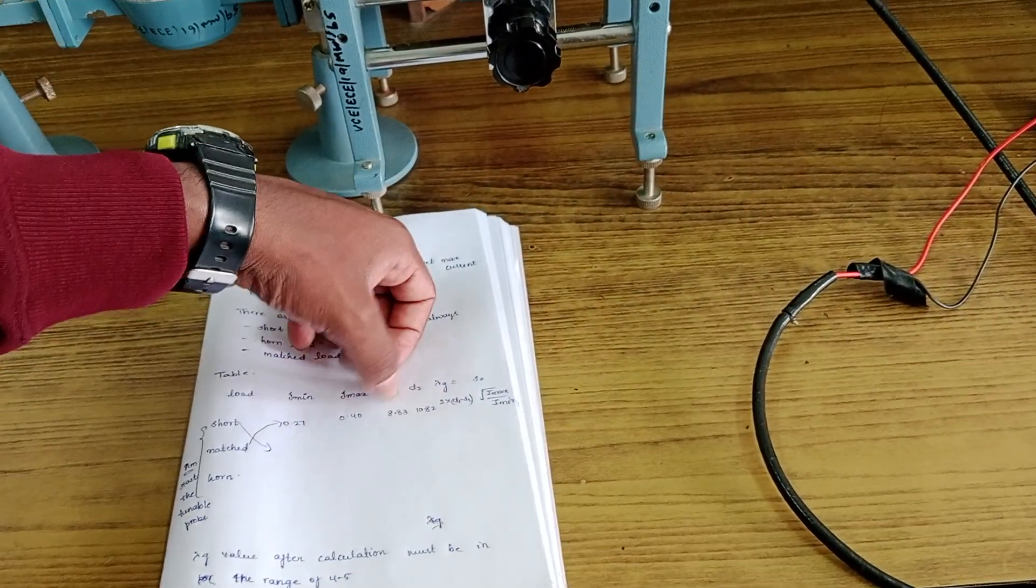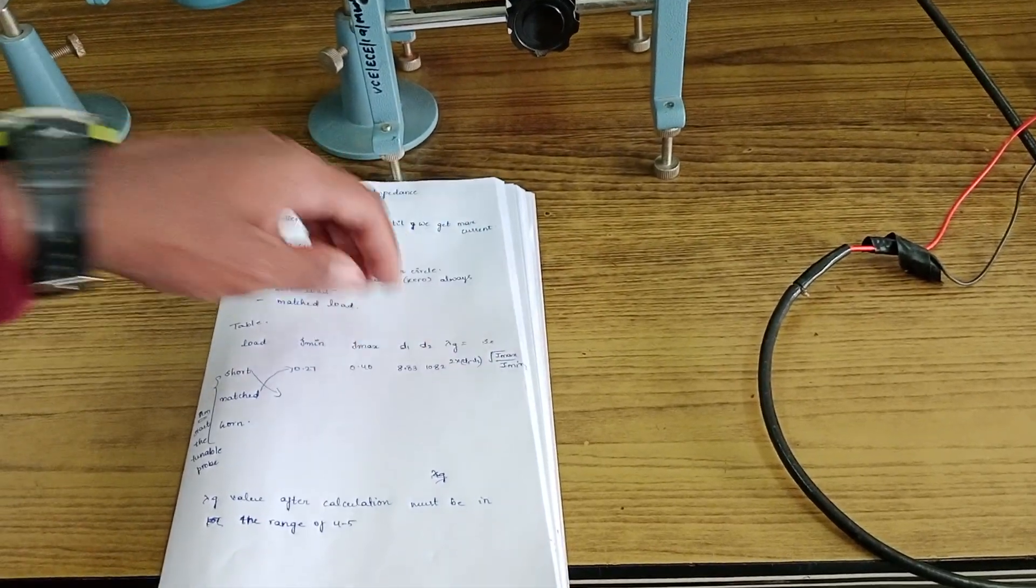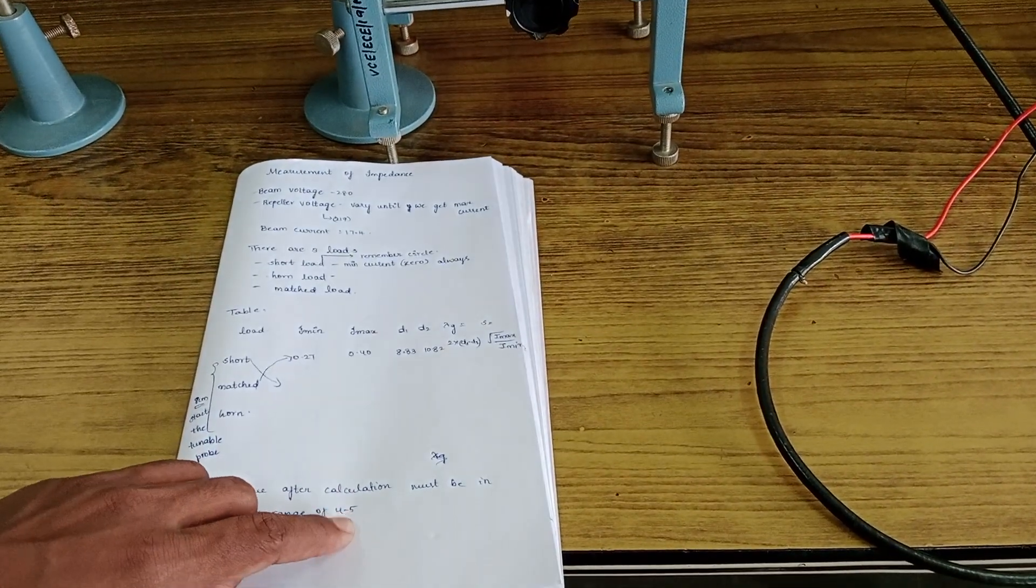D1 and D2 as I have mentioned you have to note down them. And you have to calculate Lambda G as per the formula 2 into D1 minus D2. While doing this experiment you have to make sure that Lambda G value must be in the range of 4 to 5.